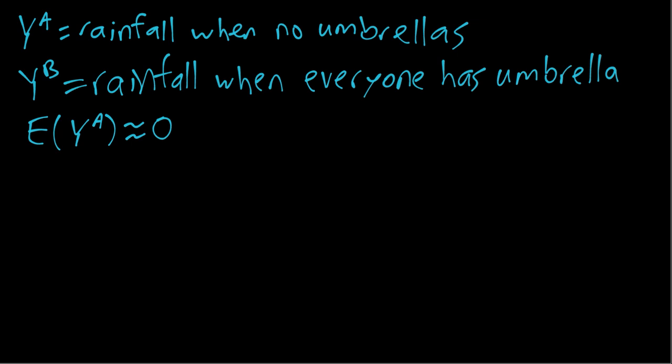In contrast, if everyone has an umbrella, that's probably because it's raining, so we'll get some value that is greater than zero, certainly on average. In other words, we'll get some positive value for the mean of Y^B that's bigger than the mean of Y^A, which was approximately zero.